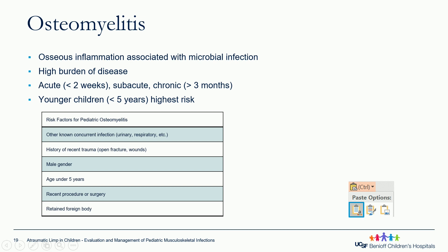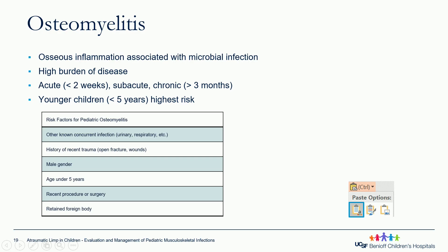Moving on to osteomyelitis — this is an actual infection of the bone that causes a high burden of disease. We categorize it by chronicity: acute being less than two weeks, subacute two to three months, and more than three months considered chronic. Children less than five years old are at highest risk, although you can see this across different age ranges. Risk factors other than age include other infections — urinary or respiratory — recent trauma, male gender, recent surgery, or a retained foreign body.